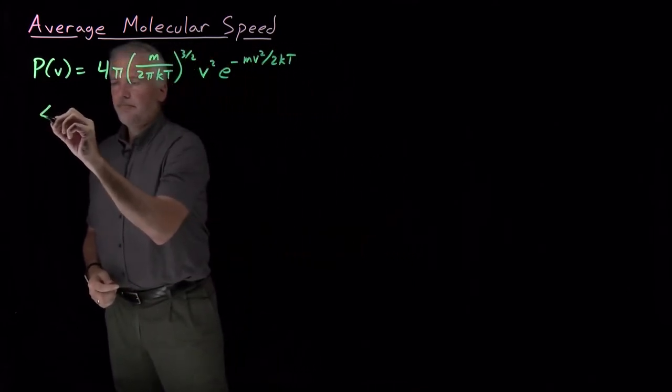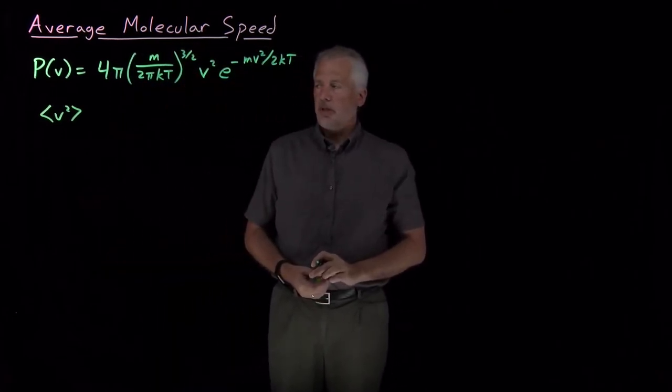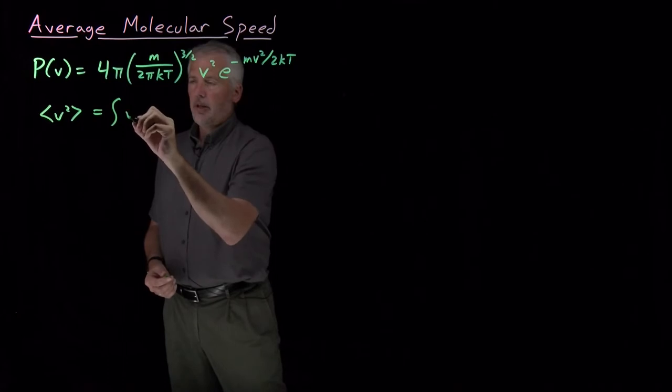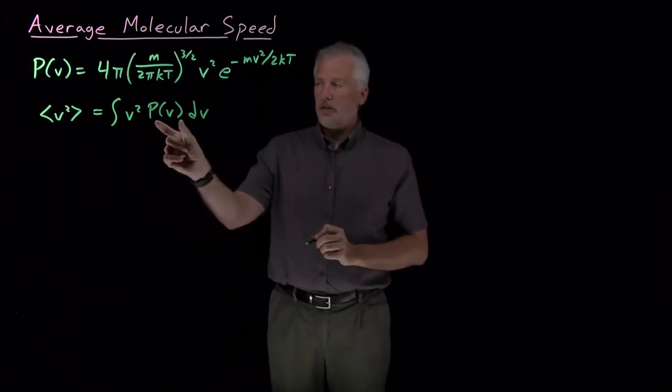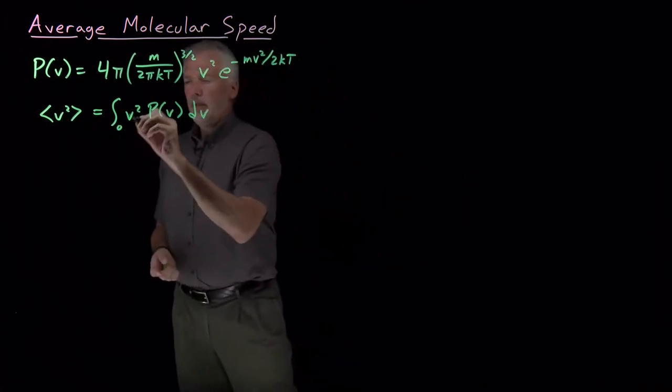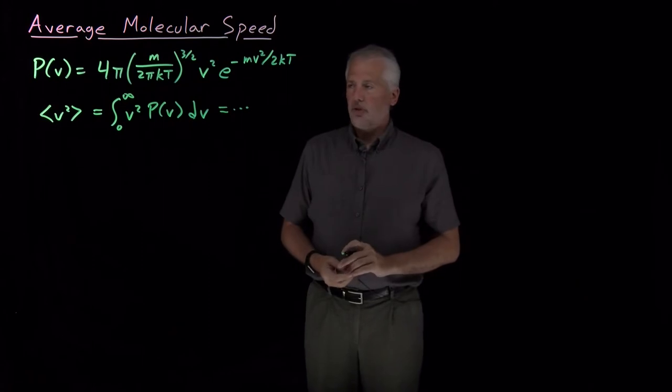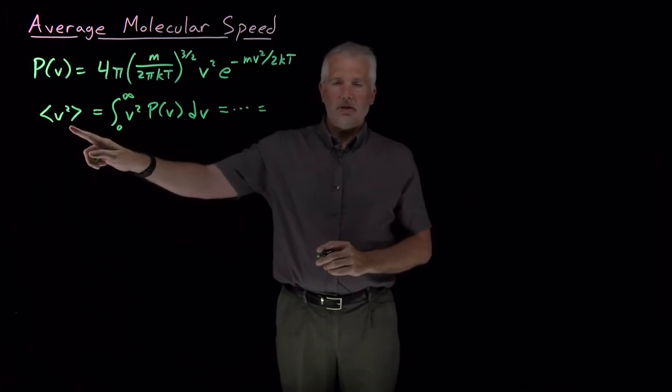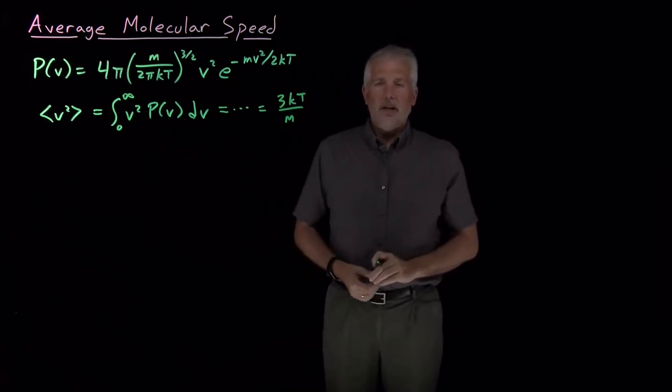And the valuable thing about this is it allows us to calculate average speeds of various different types. For example, one that we've already seen: if we wanted to know the mean square speed of molecules at a particular temperature, we could evaluate that average of v squared as just the integral of v squareds multiplied by the probability of having that speed v, integrated over all possible speeds from zero up to infinity. We know what the answer would come out to be because we've done that problem already. The mean squared speed turned out to be 3kT over m. But now we have an alternate way that we could have calculated it.